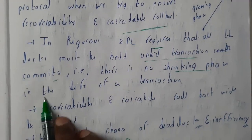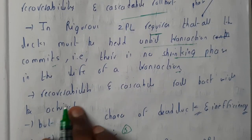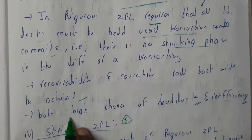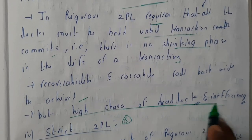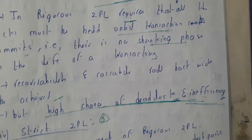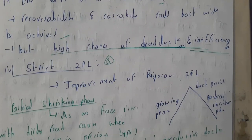Recoverability and cascadable rollback are achieved, but there is a high chance of deadlock and this process is inefficient.